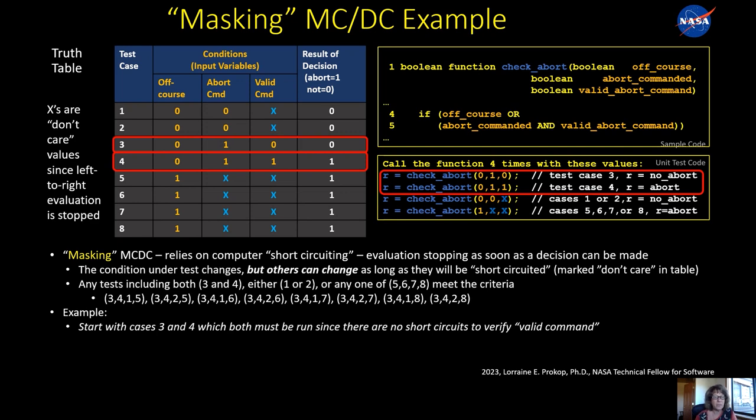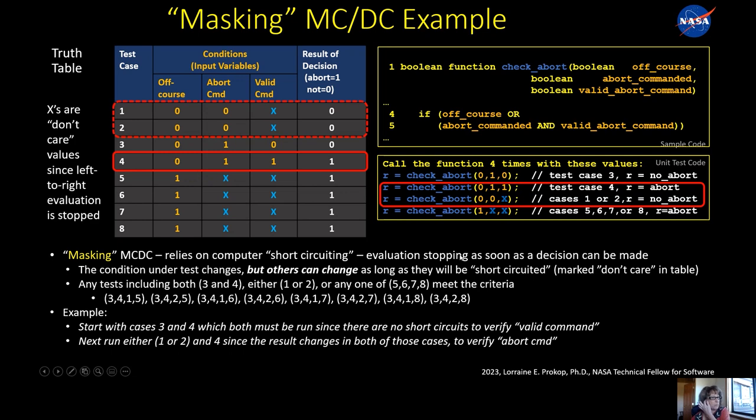So by way of an example, let's start in this case, let's start the other way, the reverse direction and go for the elements in the table that don't have any don't care variables. So you have to run tests three and four because there are no don't cares. So you run those two tests and you call those first and you verify, validate that the flag is working properly. You get no abort and then an abort for test case four.